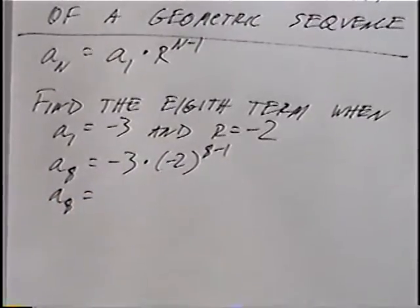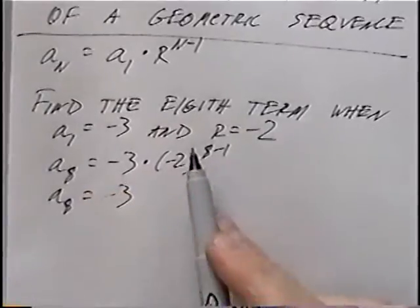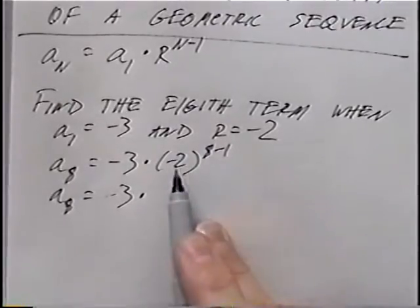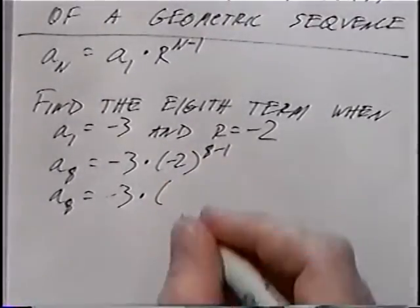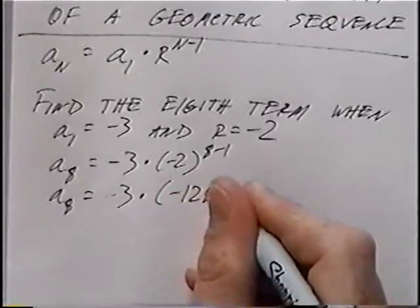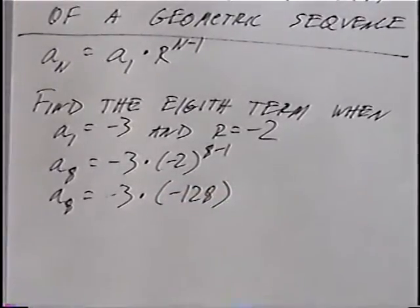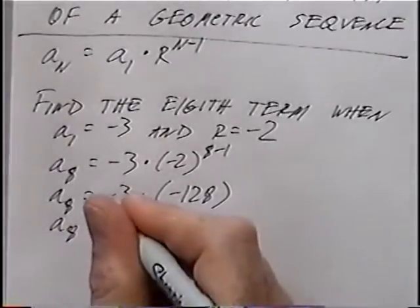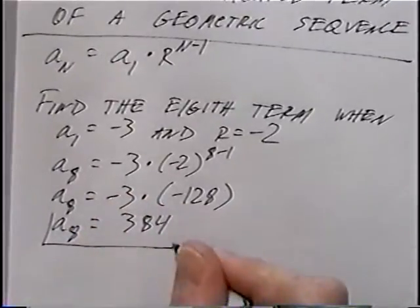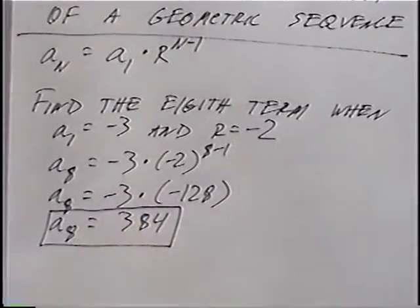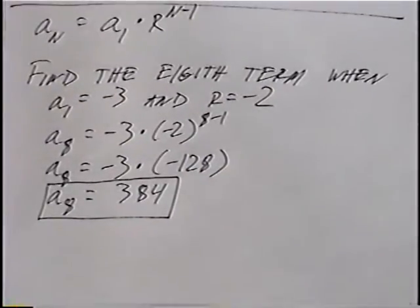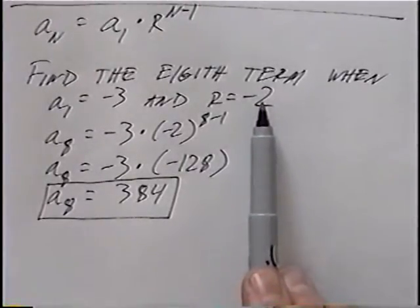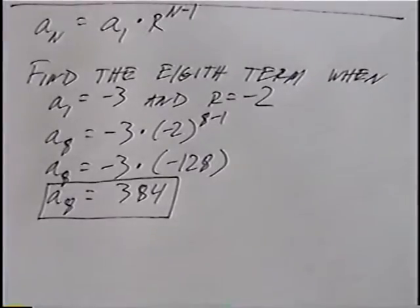So a sub 8 equals negative 3 times negative 2 to the 7th power. We do exponents first: 8 minus 1 equals 7, and negative 2 to the 7th power equals negative 128. Multiplying that out: negative 3 times negative 128 equals 384. So starting at negative 3 and multiplying by negative 2 each time, the 8th term is 384.